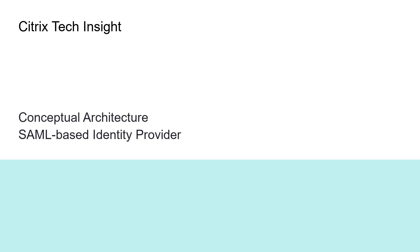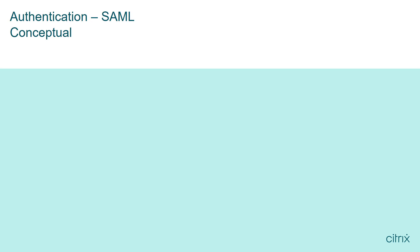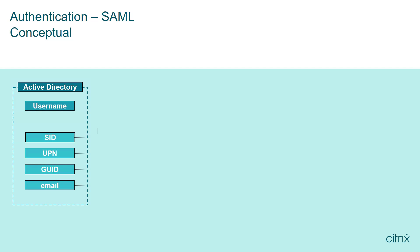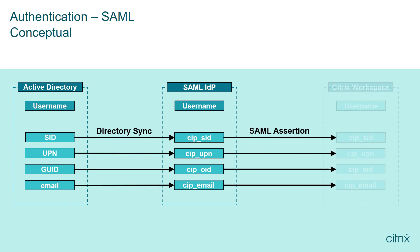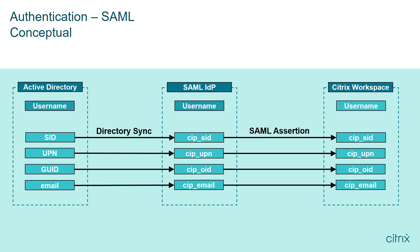Architecturally, the SAML authentication configuration requires the user accounts within the SAML identity provider be synchronized from the organization's Active Directory domain. Synchronizing allows specific Active Directory parameters needed for authorization and single sign-on to be included within the SAML identity and get included with the SAML assertion to Citrix Workspace.